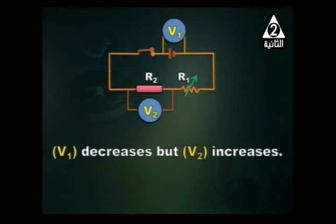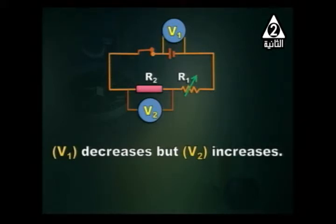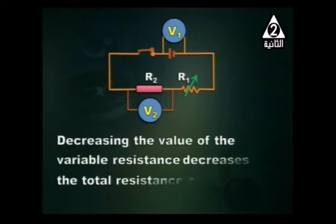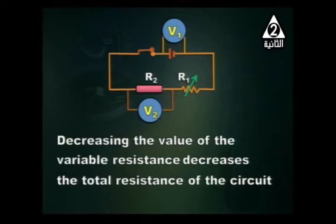V1 decreases but V2 increases. When R1 is decreased, total resistance of the circuit decreases, current through the battery increases. When current increases, lost voltage or internal voltage increases, so terminal voltage decreases. V2 is given by the product of current and R2; R2 is constant, so when current increases, V2 increases.